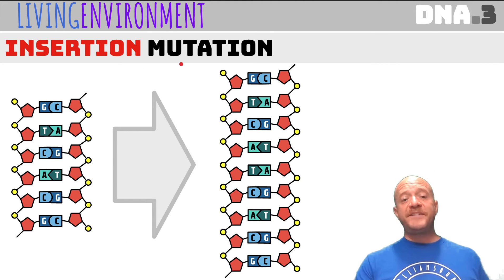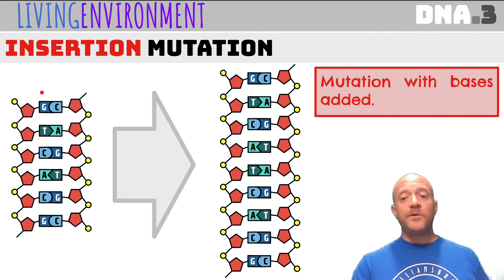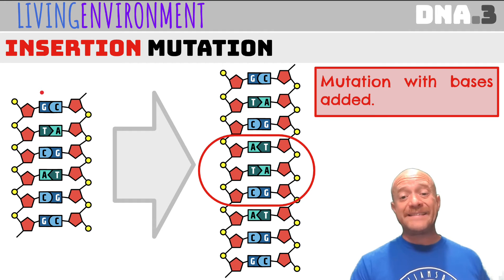Now, one type of mutation is an insertion mutation. So insertion is a mutation with bases added. This is the original strand. This is the new strand. We've added some more bases. That's insertion.